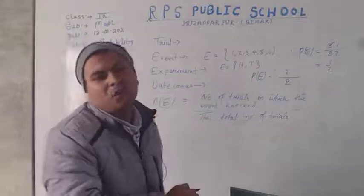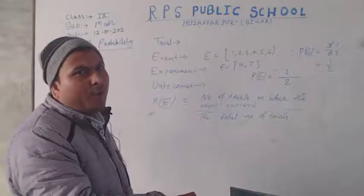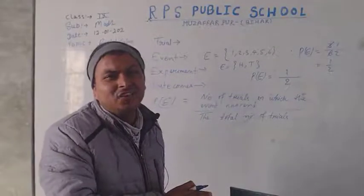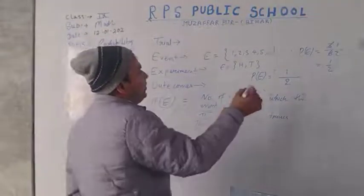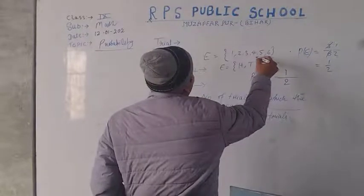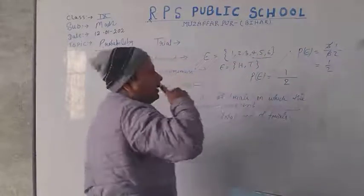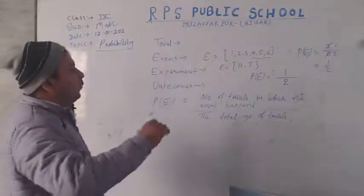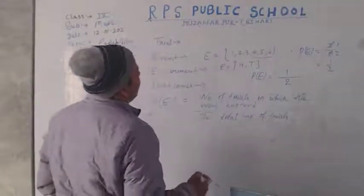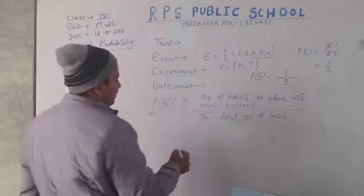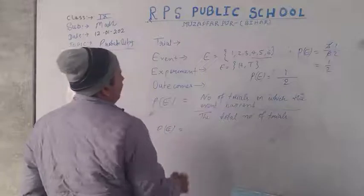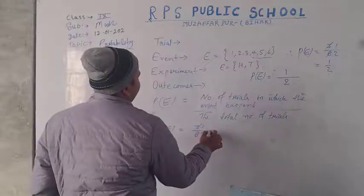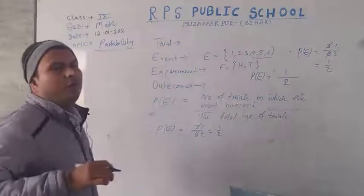What is the probability of getting a number greater than 3 on a dice? The numbers greater than 3 on a dice are 4, 5, and 6. Hence, the probability of getting a number greater than 3 is P(A) = 3/6 = 1/2.